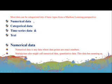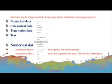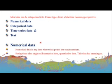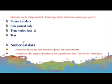Data is nothing but information. The first category is numerical data. Numerical data is where data points are exact numbers. This might also be called quantitative data, and the data has meaning as a measurement.